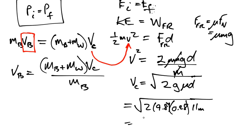Get my trusty RPN calculator, 2 enter 9.8 times, 0.28 times, 11 times, and now take the square root, and I get 7.77 meters per second.